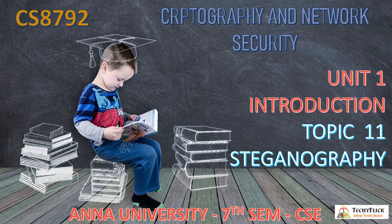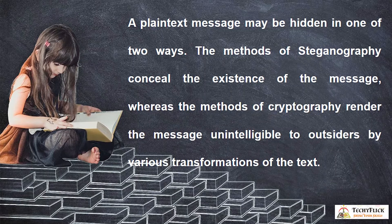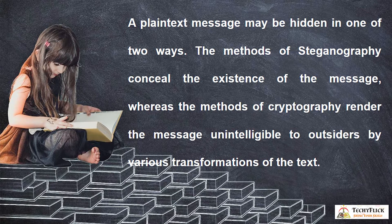CS 8792, Topic 11: Steganography. These diagrams represent steganography techniques. A plain text message may be hidden in one of two ways. The methods of steganography conceal the existence of the message, whereas the methods of cryptography render the message unintelligible to outsiders by various transformations of the text.